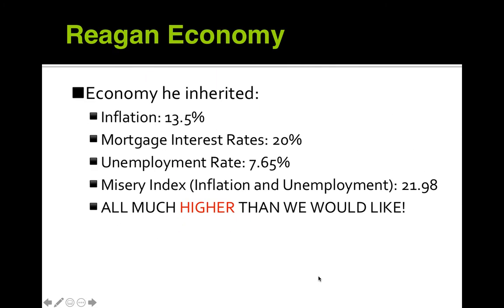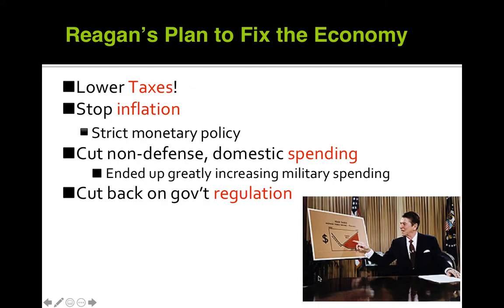Reagan's inherited economy: inflation was at 13.5%, mortgage interest rates were at 20%, unemployment was at 7.65%, and the misery index — a combination of inflation and unemployment — was at nearly 22%. Reagan inherited a very bad economy after the 1970s, with stagflation, OPEC oil issues, and a ridiculous housing market.